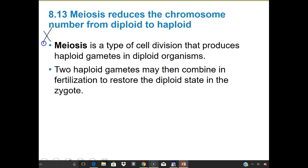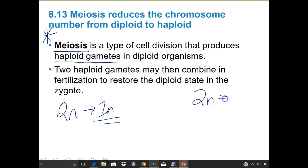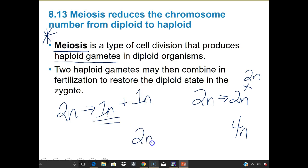Meiosis is a type of cell division that produces haploid gametes in diploid organisms — haploid sex cells, egg and sperm. The two haploid gametes may then combine in fertilization to restore the diploid state of a zygote. We have to go from 2N to 1N, because if we didn't, fertilization would yield 4N — four times the genetic information — so meiosis gets us to 1N so that when another partner joins through sexual reproduction, the two restore that diploid state.